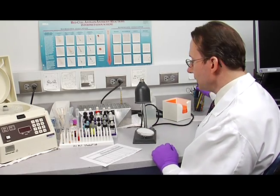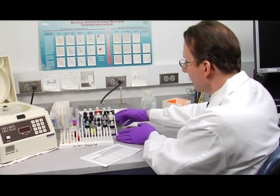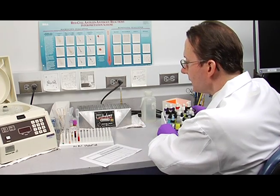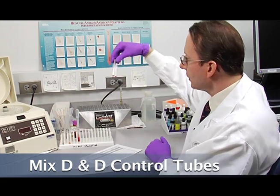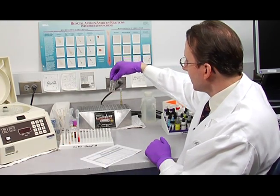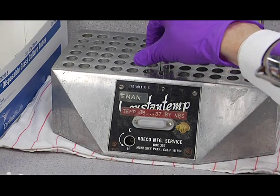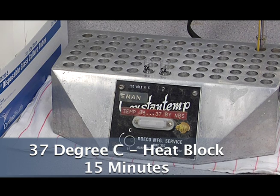Now I'll show you how to do the weak D or DU typing. The first step to that procedure is to take your D tube and your D control tube, mix them, and place them in your 37 degrees C heat block. You need to incubate for 37 degrees C for 15 minutes.